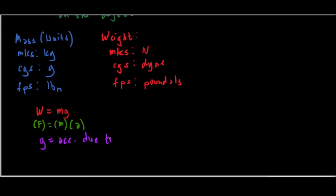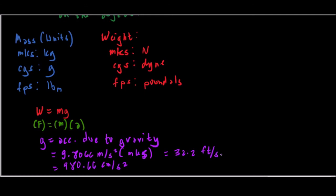The value of g depends on the unit system. For MKS that is 9.8066 meters per second squared. For CGS it is equal to 980.666 centimeters per second squared. And for FPS that is equal to 32.2 feet per second squared.